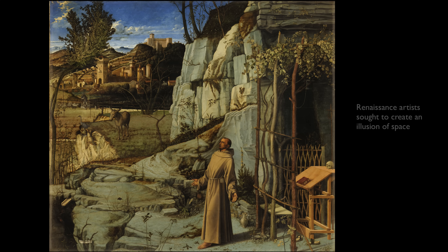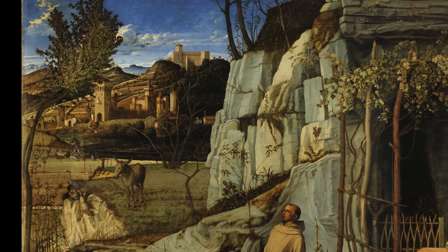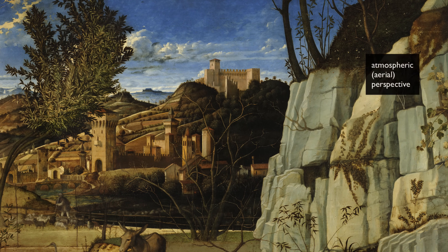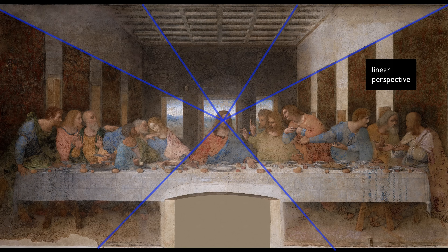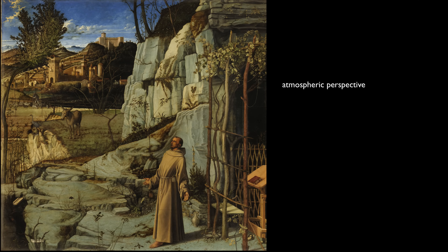The artists of the Renaissance were really interested in creating a convincing illusion of space. One of the ways they achieved that was by using a technique called atmospheric or aerial perspective. We often think about linear perspective, but for linear perspective you need to have architecture. For a landscape, you use atmospheric perspective.